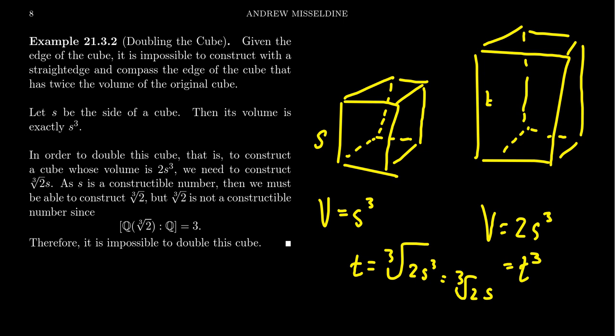Now, because the field of constructible numbers is itself a field, if we can construct s, we can divide by s, and therefore it requires we construct the cube root of 2. So the side length of that cube is going to be the cube root of 2. In order to construct the cube root of 2, we would need it to be a constructible number.